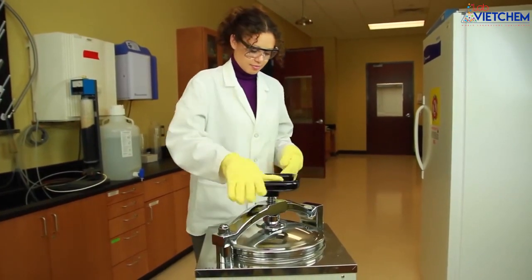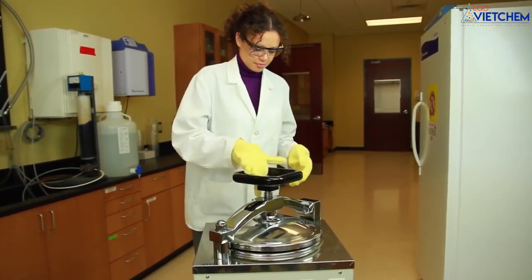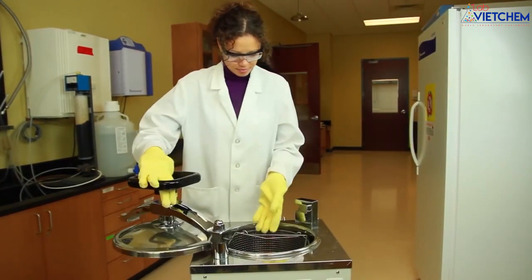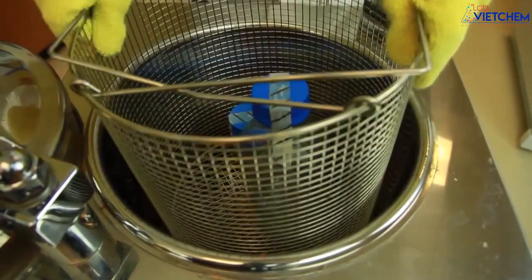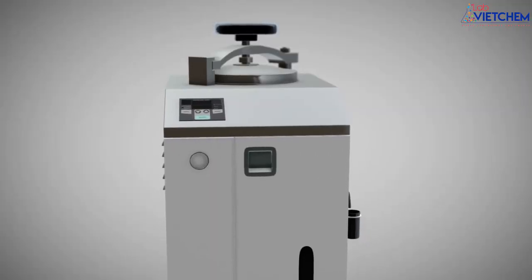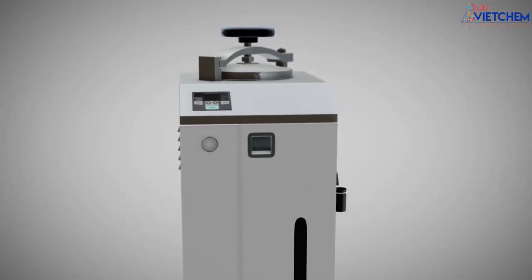Once the cycle ends and the pressure gauge reads 0 psi, slowly open the door and remove the basket. The black lines are visible on the tape, indicating that the proper temperature was reached. The autoclave is now ready for another run.